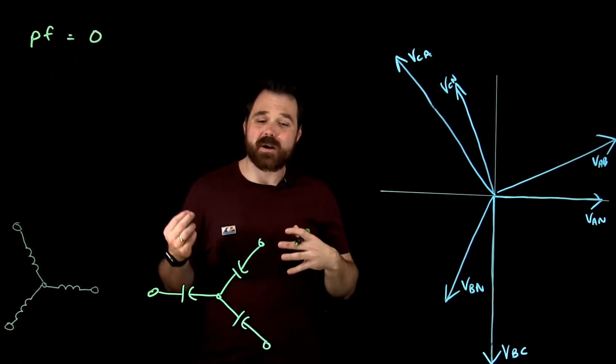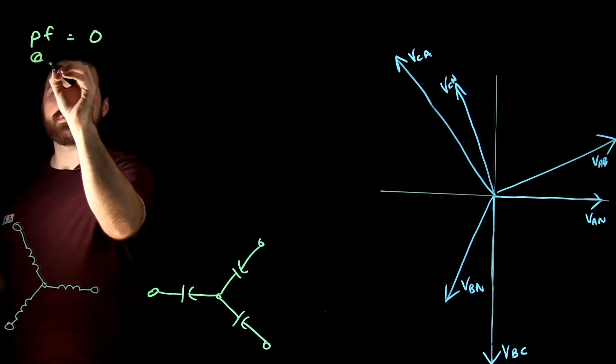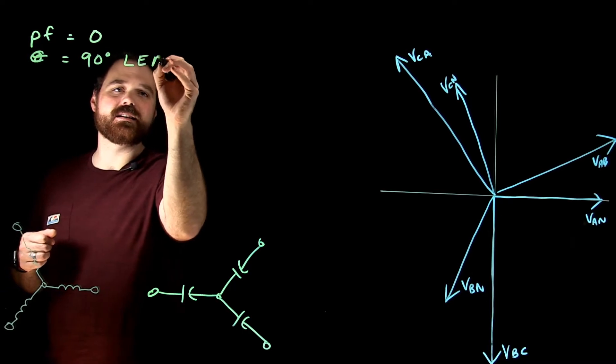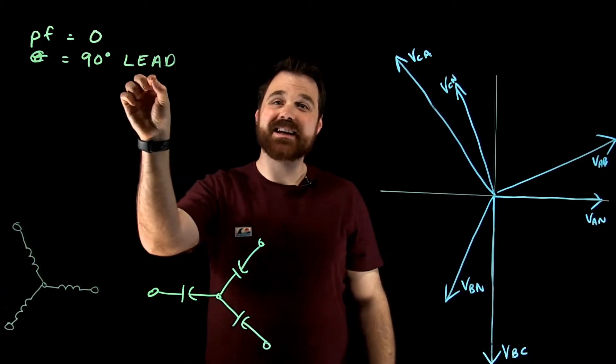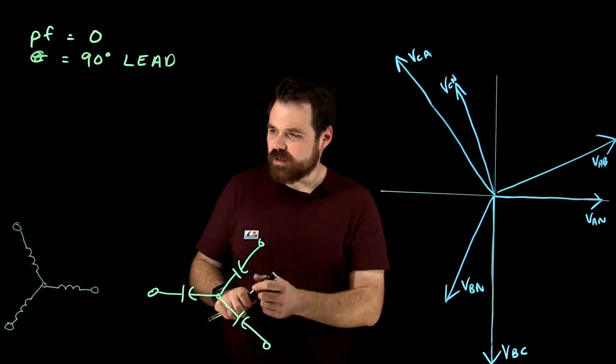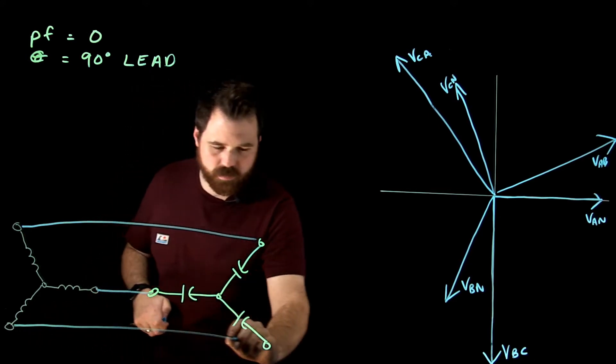And we could say with that, our phase angle for a capacitor is a 90 degree lead, meaning our current is leading our voltage in each phase. So here they are, I'm going to connect them all up. One, two, three.